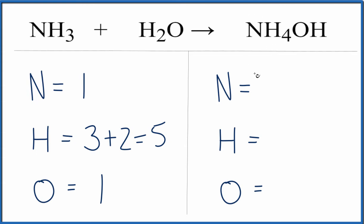Over on the product side, we have the one nitrogen. The four hydrogens here, plus don't forget this hydrogen, and that gives us five hydrogens, and we have one oxygen.